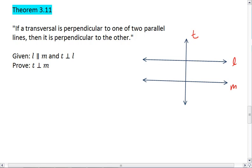Theorem 3.11 says that if a transversal is perpendicular to one of two parallel lines, then it is perpendicular to the other.